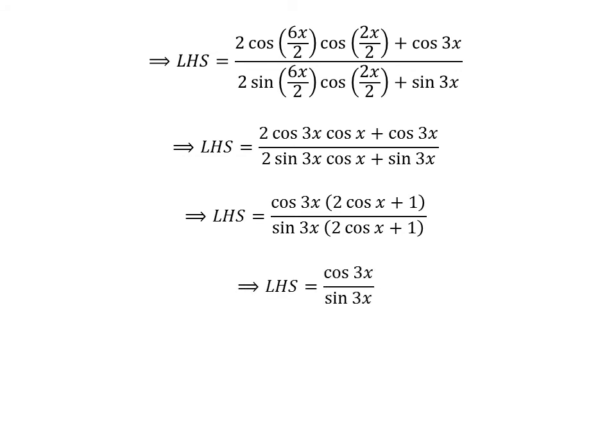Cancelling out the common factor (2 times cosine of x plus 1) in the numerator and denominator gives us the left hand side equal to cosine of 3x upon sine of 3x. Since cosine of 3x upon sine of 3x equals cotangent of 3x, the left hand side equals cotangent of 3x, which is the right hand side. So we have proved the given equation.